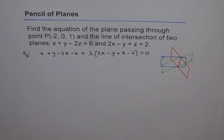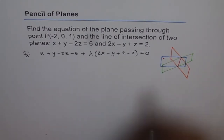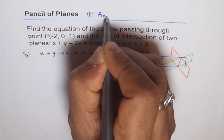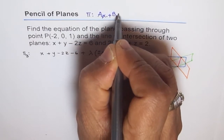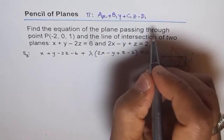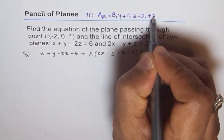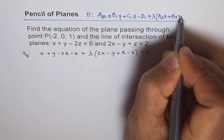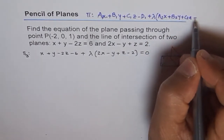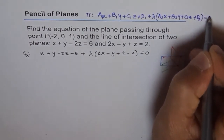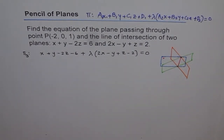Let me write the general formula. A new plane passing through the line of intersection of planes a1x + b1y + c1z − d1 = 0 and a2x + b2y + c2z − d2 = 0 is given by: (a1x + b1y + c1z − d1) plus lambda times (a2x + b2y + c2z − d2) equals 0.